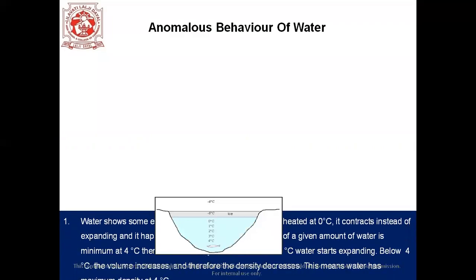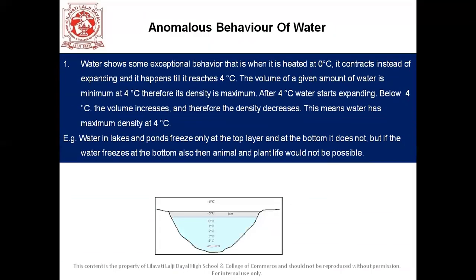Moving ahead, we come to the anomalous behavior of water. Water shows some exceptional behavior. When it is heated at zero degrees Celsius, it contracts instead of expanding, and this continues until it reaches four degrees Celsius. So the volume of a given amount of water is minimum at four degrees Celsius, and therefore its density is maximum. After four degrees Celsius, water starts expanding, and before four degrees Celsius, the volume increases and the density decreases. This means water has maximum density at four degrees Celsius.